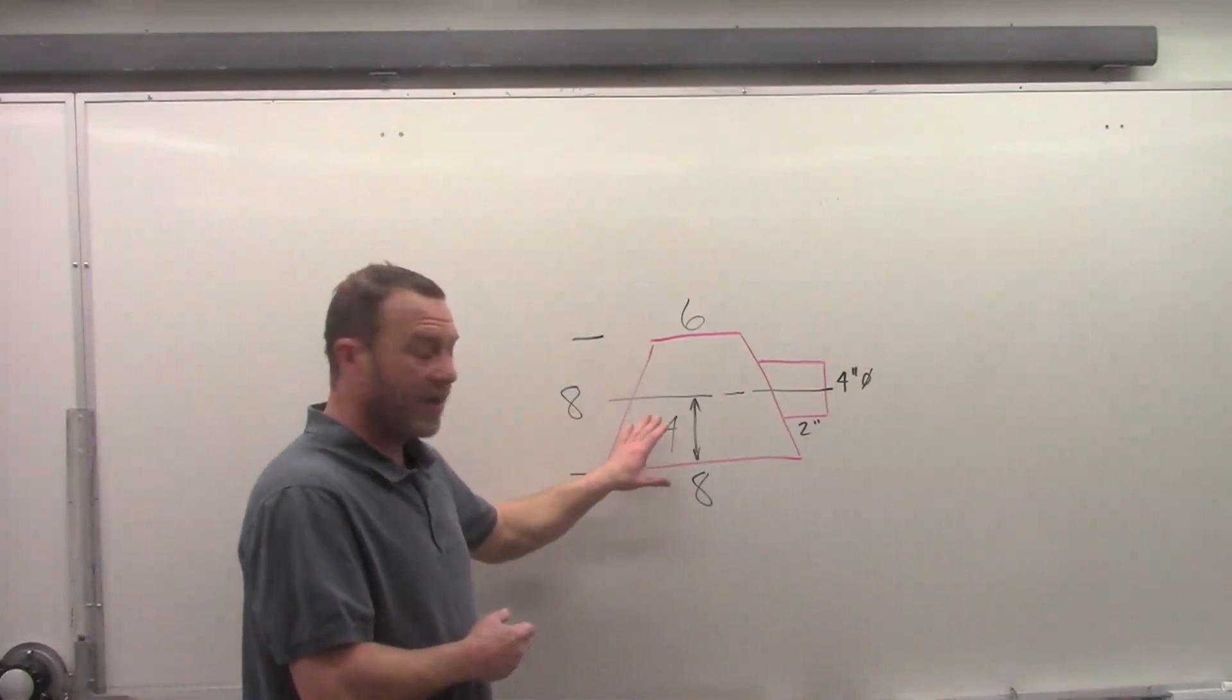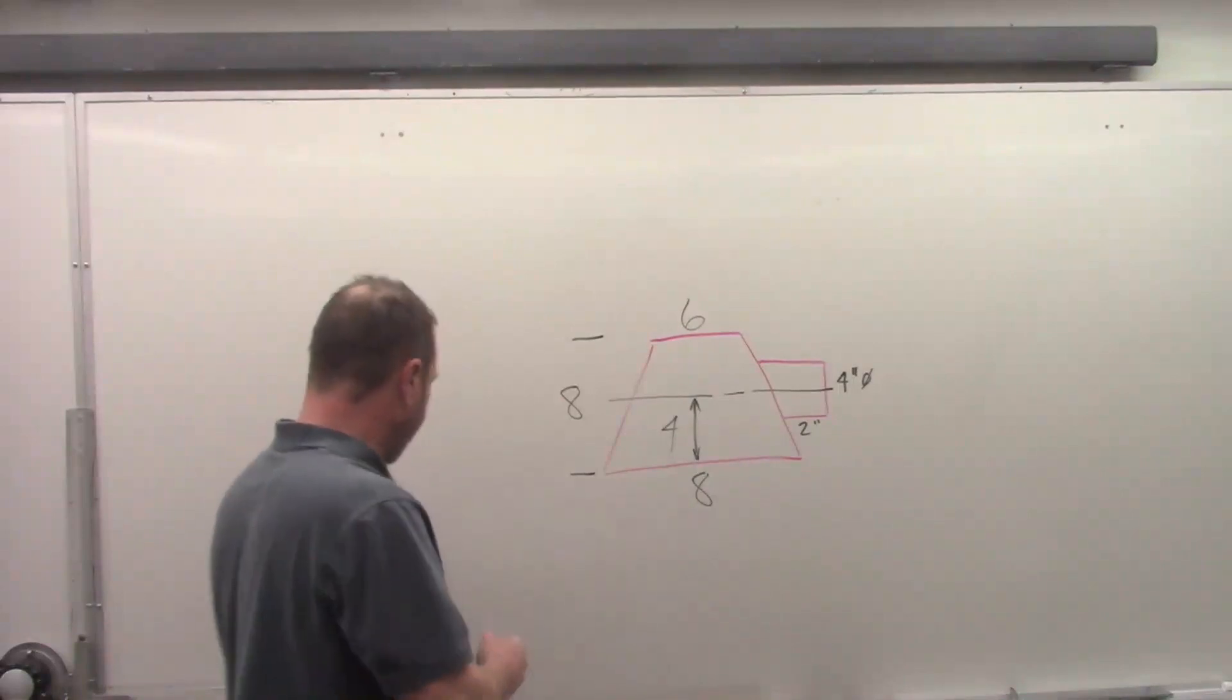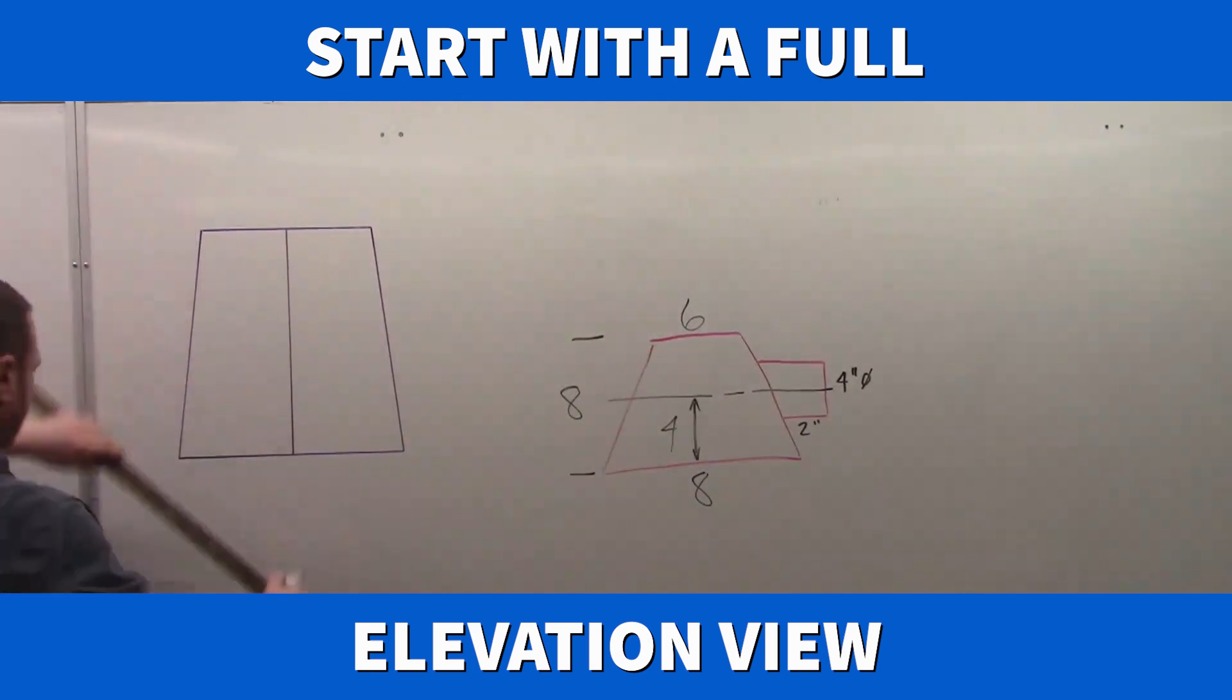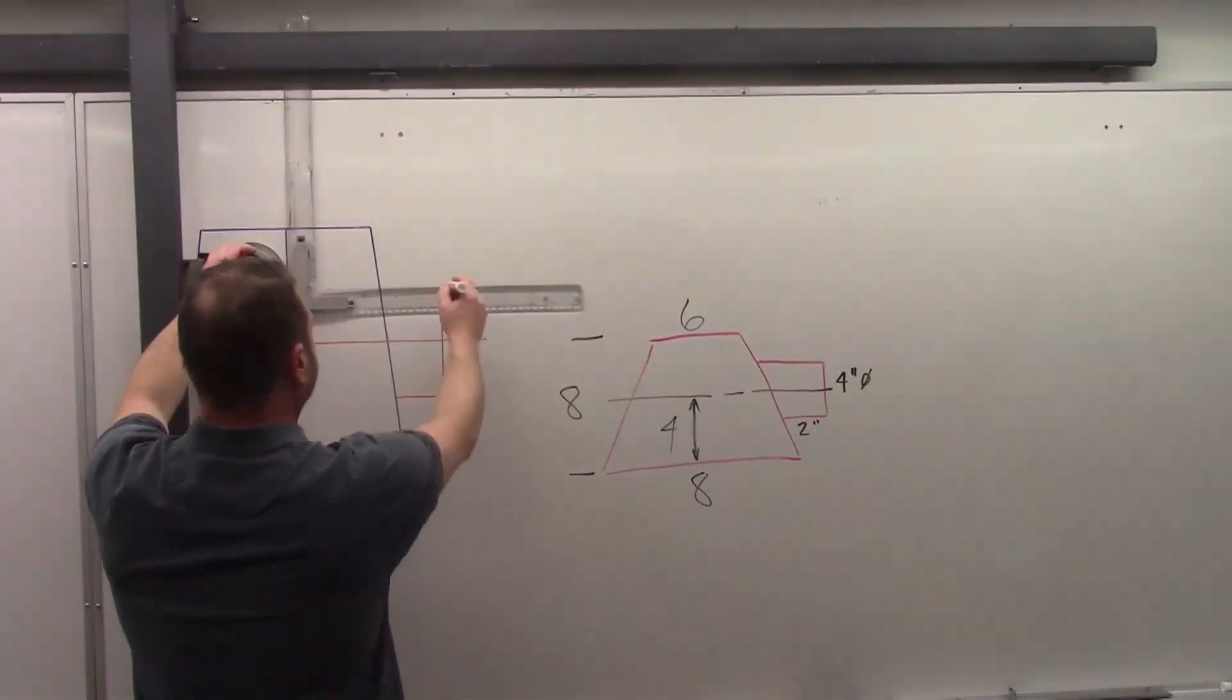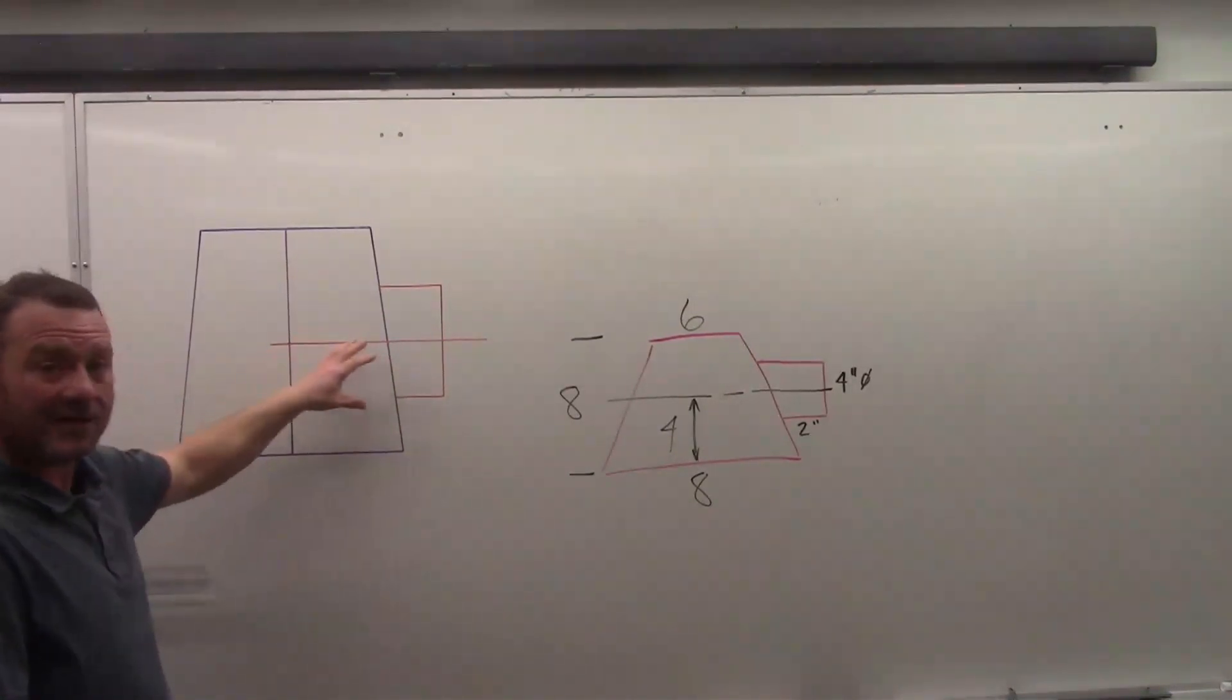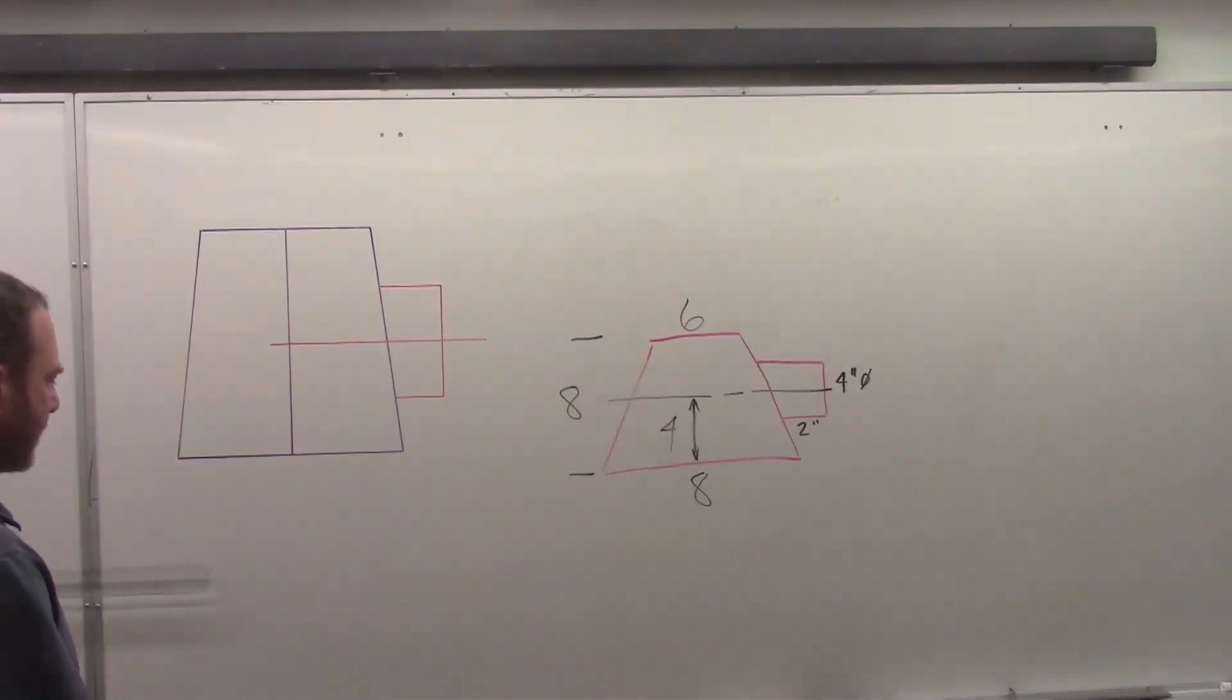Step one is to get our elevation view drawn from our sketch. There's our elevation view, I've got the cone here. Now we're not worried about developing the cone in this sense, all we're worried about is the T. We need the cone to see how it fits, how they work together, but we're not going to actually make the pattern of this cone.